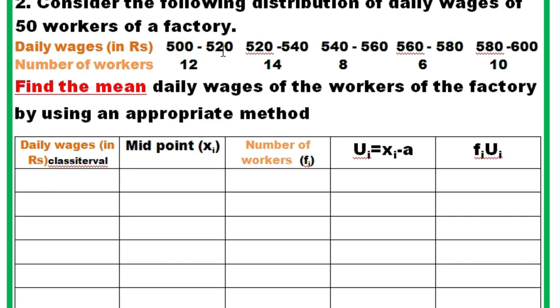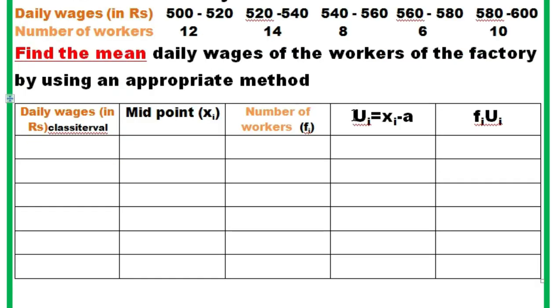You can see here the numbers are a little bigger, so we can apply the assumed mean method. When the numbers are a little bigger, then we can apply the assumed mean method. Here we make the numbers smaller so that we can operate orally. When we do multiplication, addition, subtraction with bigger numbers, it may consume time. So if we apply this method, then we can do these operations orally. I am putting all the information that is given in the table.